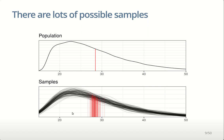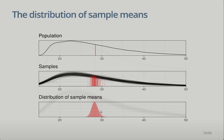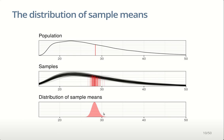When we look at the distribution of sample means, we see it follows a nice bell-shaped curve centered on the population mean, with some spread. Notice we get this normal distribution shape even though the population itself was not normal. The nice thing is we can describe this distribution using a single normal distribution, which means we don't really have to care about the distribution of the population so much.